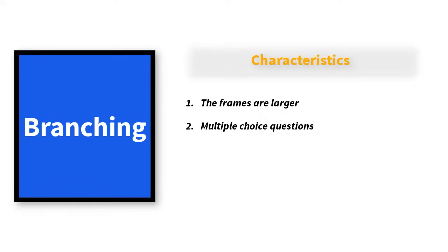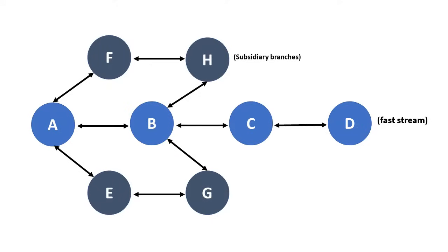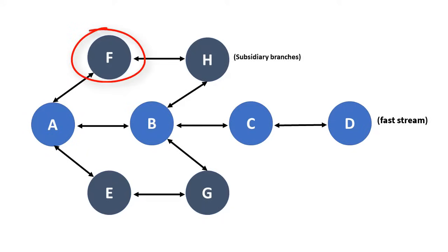If they are wrong, they are so informed and then given a reason why they were wrong. They are then offered further choices, or the same question is re-framed — the same information is presented with the original frame. If you look at the image on the screen, you see that the learner can move from A to B. If they completed the task in A and got the answers correctly, they move to B, then to C because they have mastered B, then to D. That's a fast stream. But if after attempting A they did not get the questions attached to frame A, they will be referred to F as you can see on the screen.